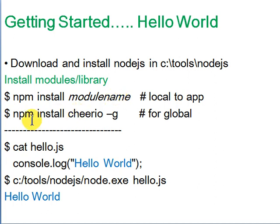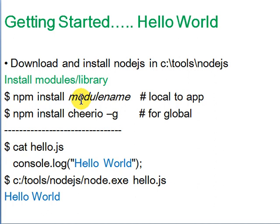If you install a module with the '-g' flag, it is installed globally so every app can use it. However, when you share a project, global modules are not included — local modules are part of the project you are working on.